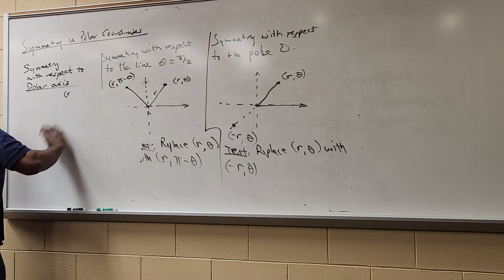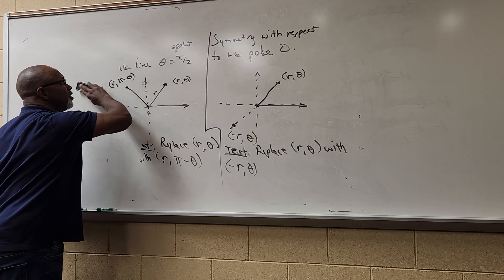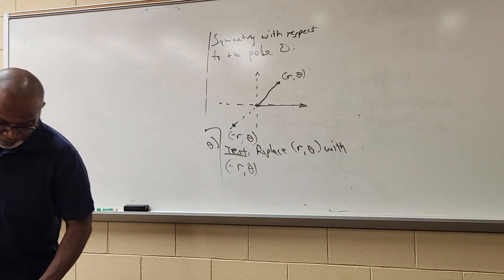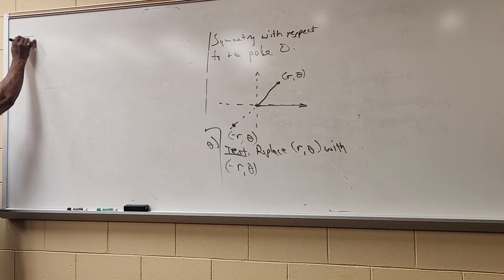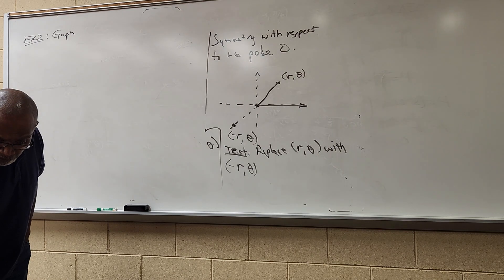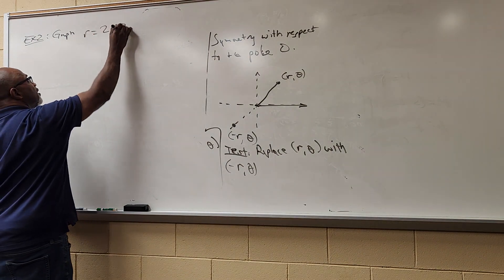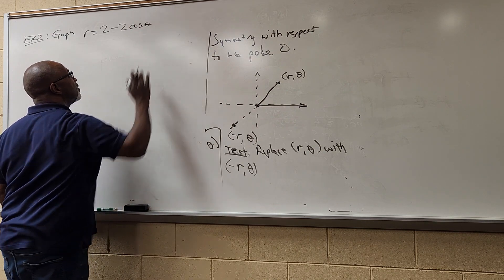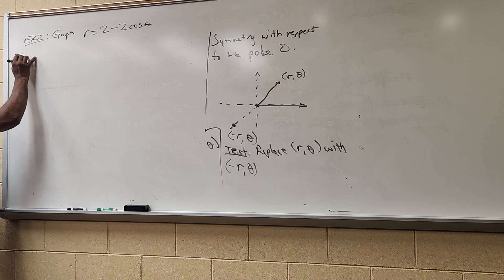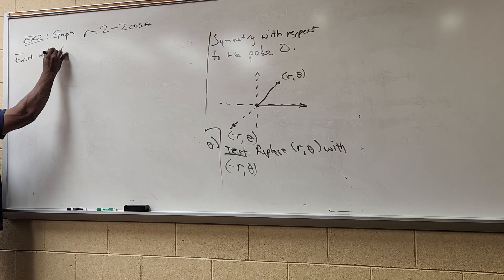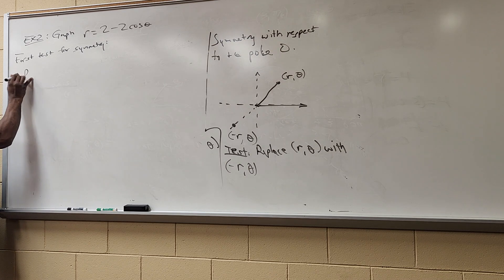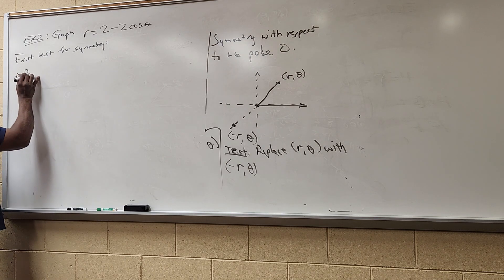With that in mind, let's apply these symmetry tests. Example two: they give us the function r = 2 - 2cos θ, and they say first test for symmetry. The first symmetry I'm going to test for is symmetry with respect to the polar axis — polar axis symmetry.